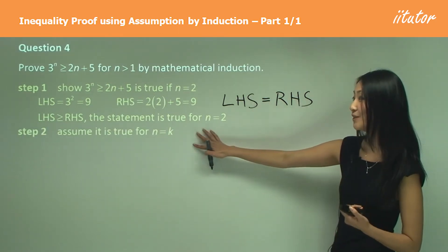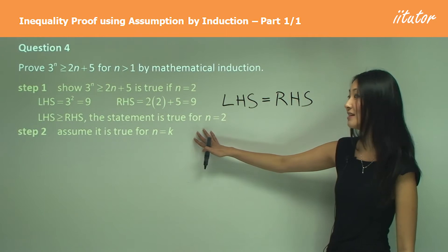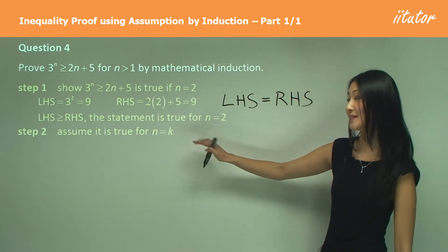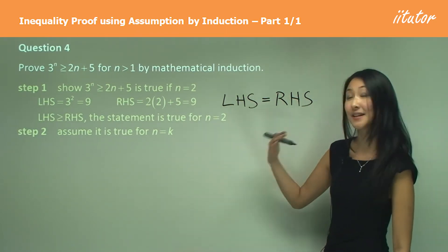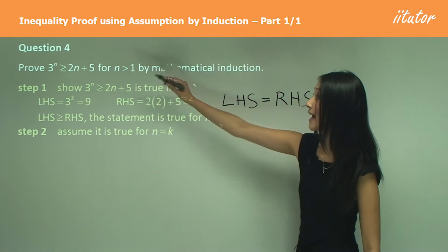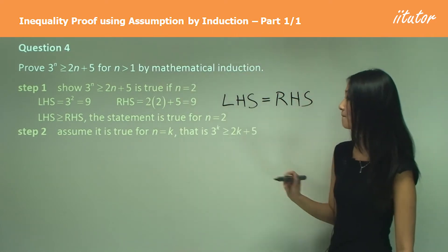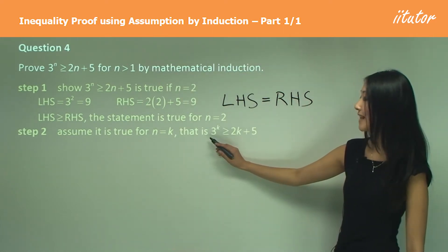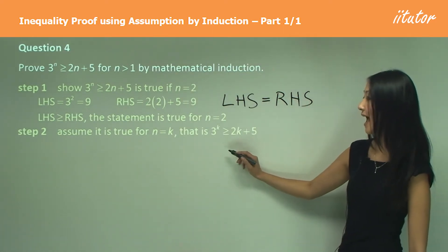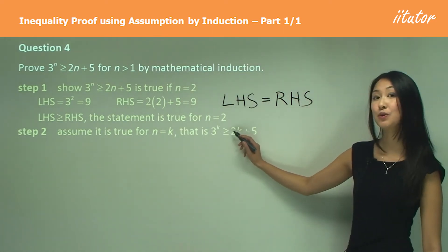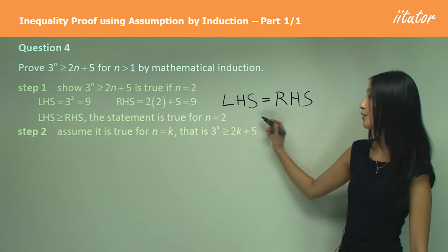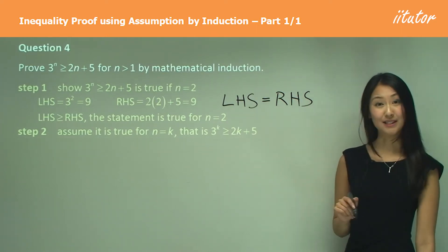Step 2: our assumption is that it is true for n equals k. Substituting k into the equation, we have that 3 to the power of k is greater than or equal to 2k plus 5.